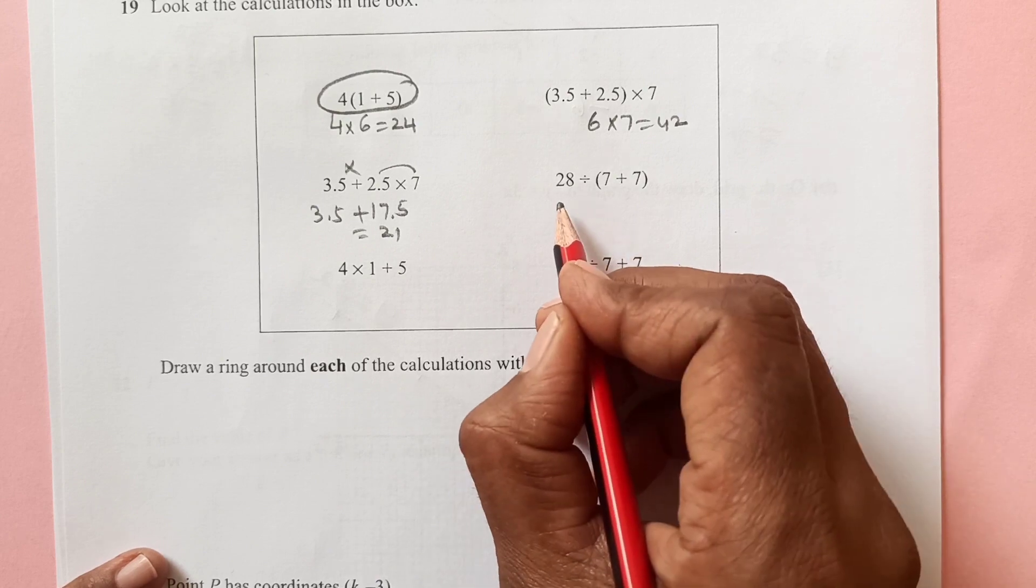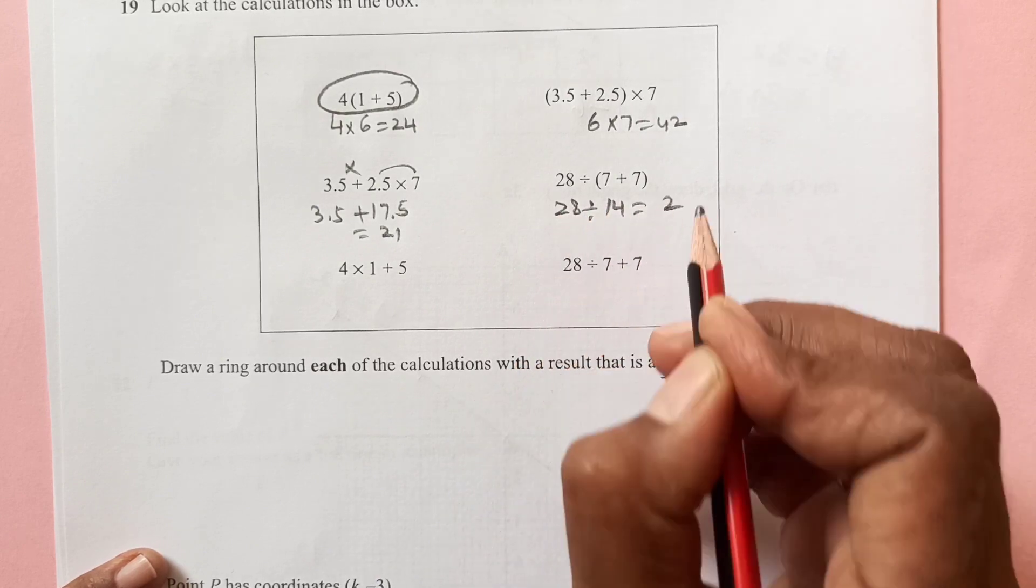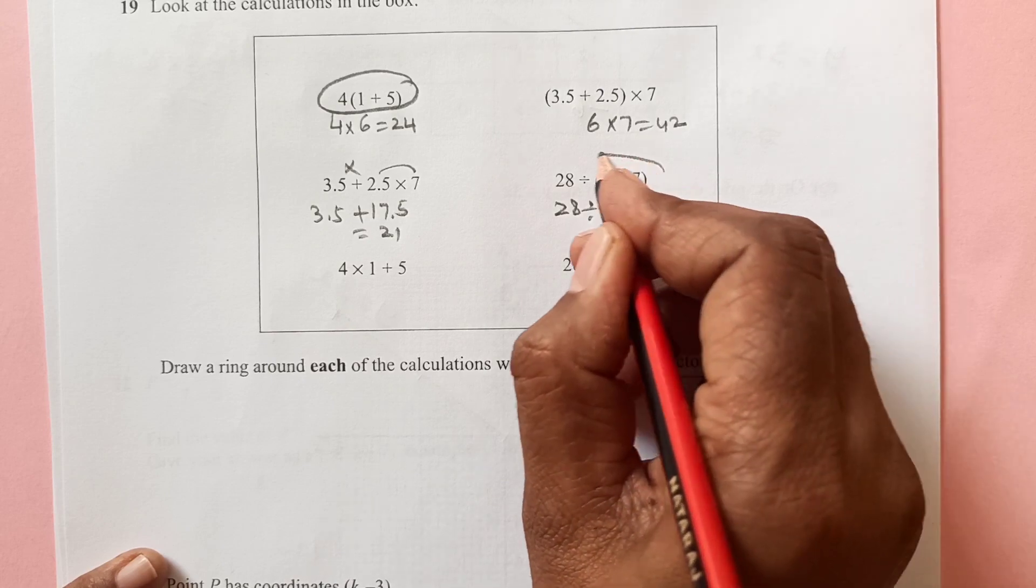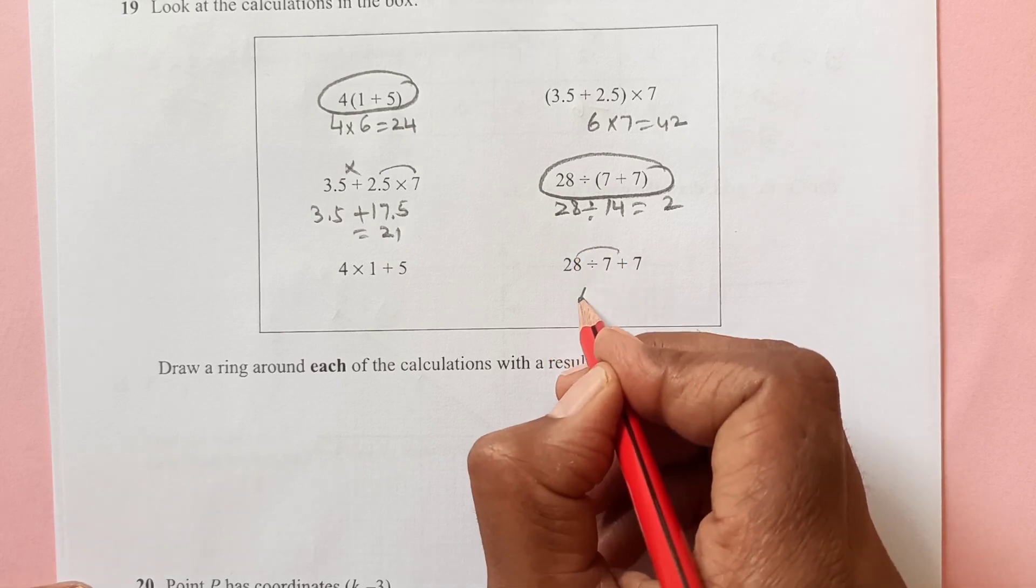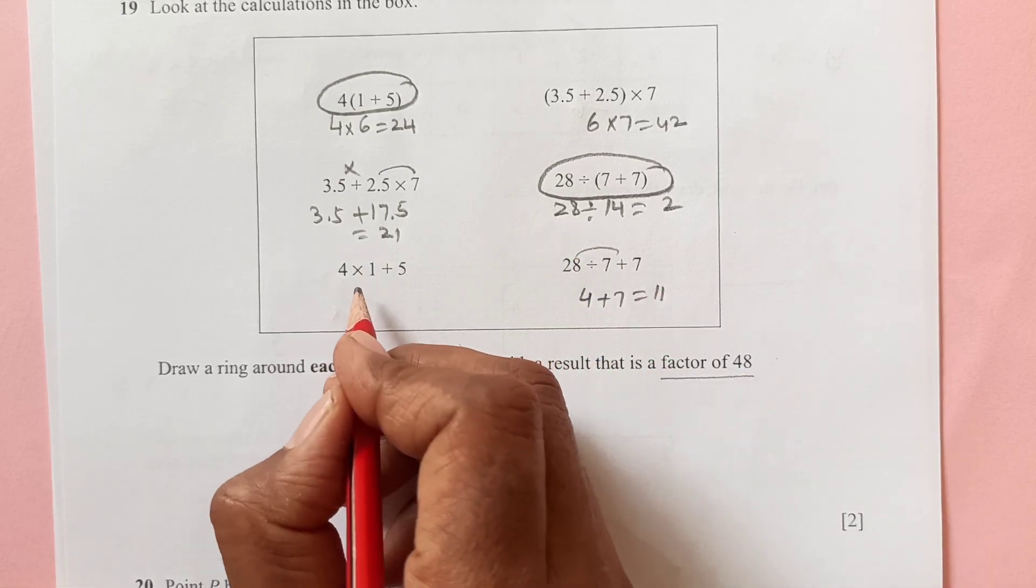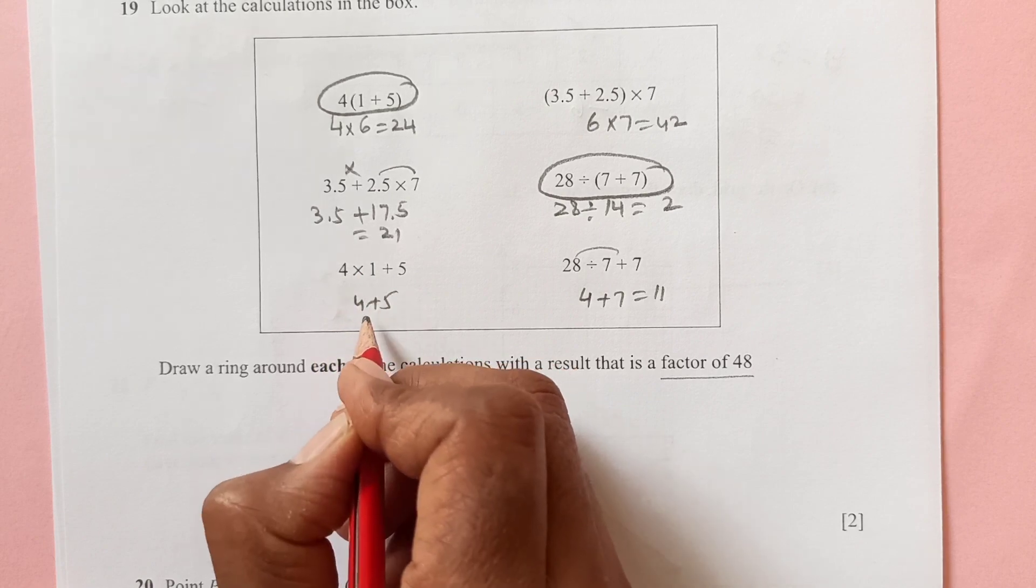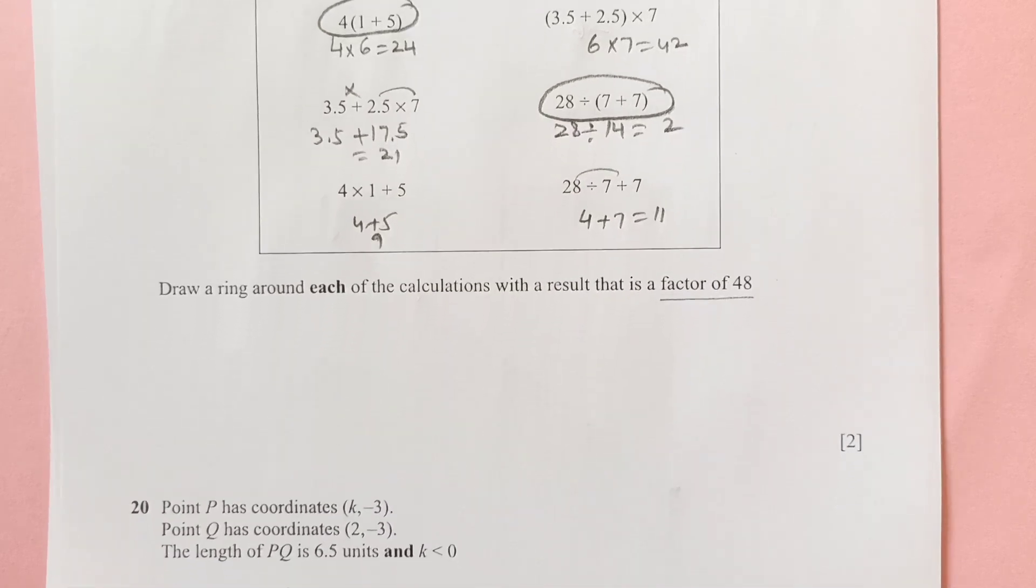This one, 3 plus 2, 5, 5 plus 1, 6 times 7 is 42, but it is not dividing 48. Now 28 divided by 14 is 2. So 2 divides 48. So this is the answer. And this one here, 4 plus 7 is 11, it is not dividing that. This is 4 plus 5 is 9, 9 is also not. So we have these 2 remaining here.